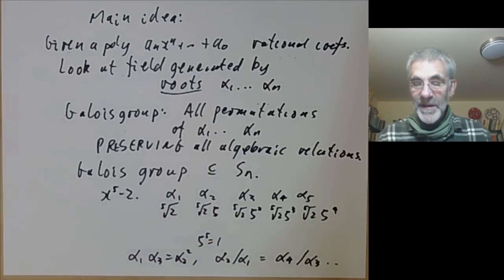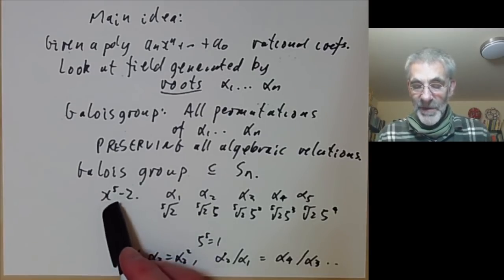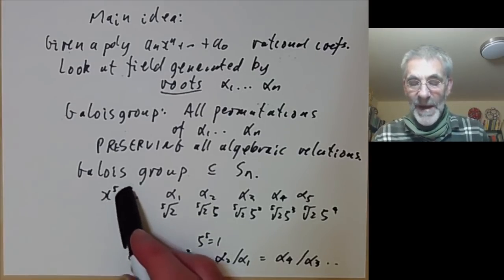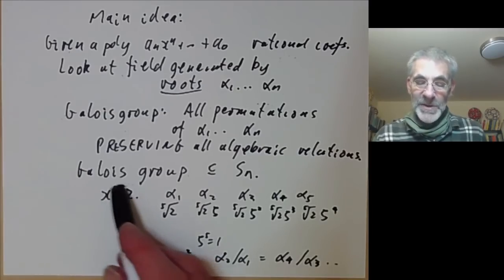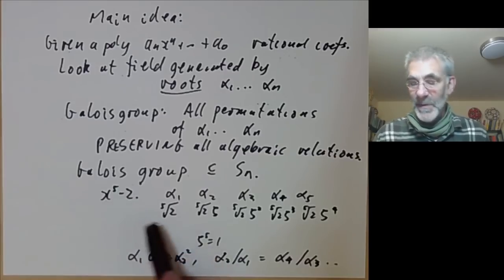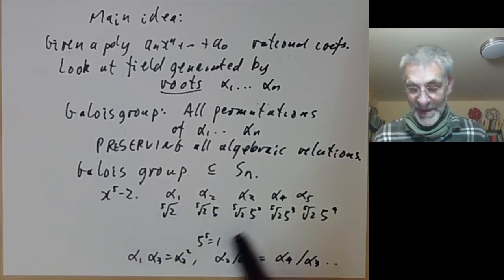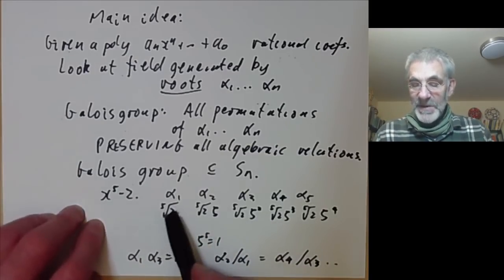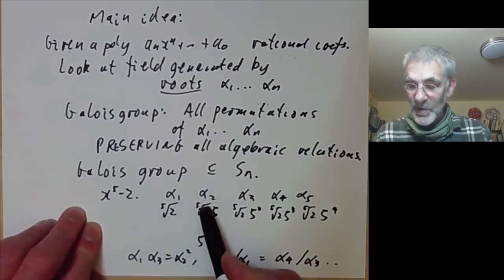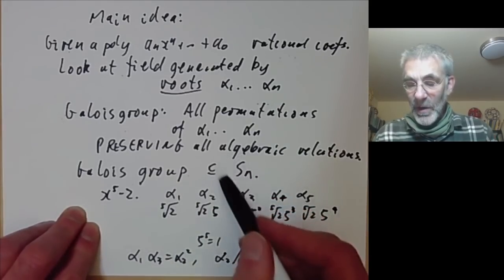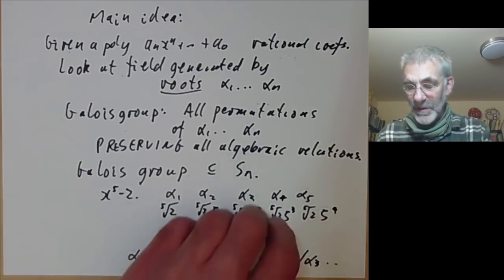I said earlier that we were going to show that the polynomial is solvable by radicals if and only if its Galois group is solvable. This polynomial is obviously solvable by radicals, we can just take fifth roots. This corresponds to the fact that its Galois group of order 20 is a solvable group, whereas the whole symmetric group S5 is not solvable.